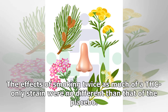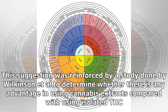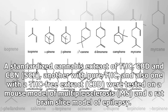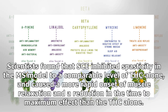The effects of smoking twice as much of a THC-only strain were no different than that of the placebo. This was reinforced by a study by Wilkinson et al. to determine whether there is any advantage in using cannabis extracts compared with isolated THC. A standardized cannabis extract (SCE) of THC, CBD, and CBN, another with pure THC, and one with a THC-free extract (CBD) were tested on a mouse model of multiple sclerosis and a rat brain slice model of epilepsy. Scientists found that SCE inhibited spasticity in the MS model to a comparable level of THC alone, and caused a more rapid onset of muscle relaxation and reduction in time to maximum effect.